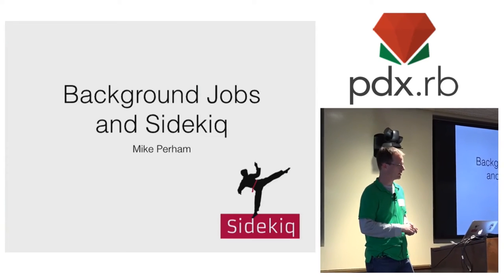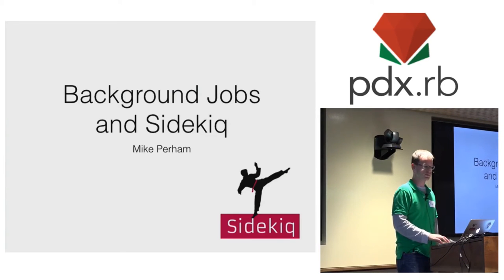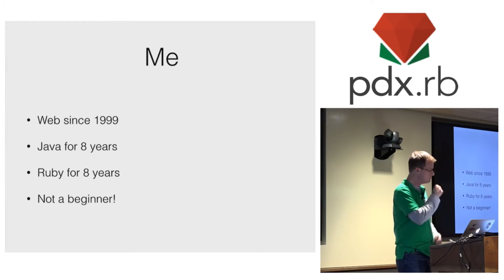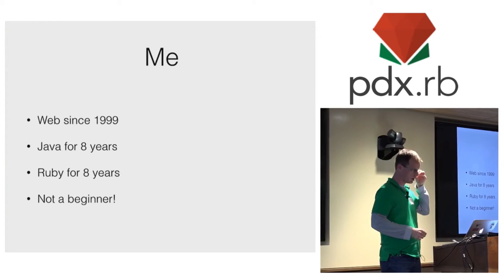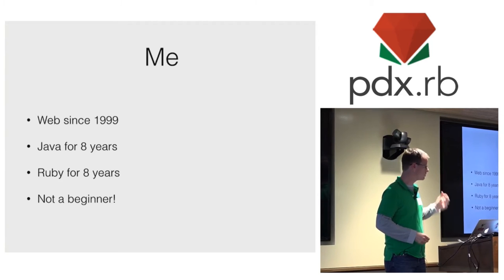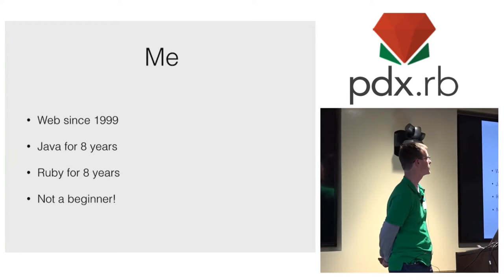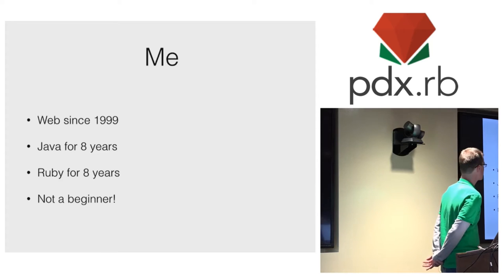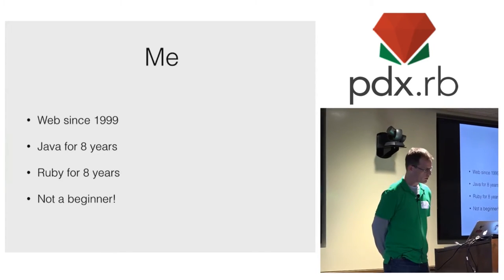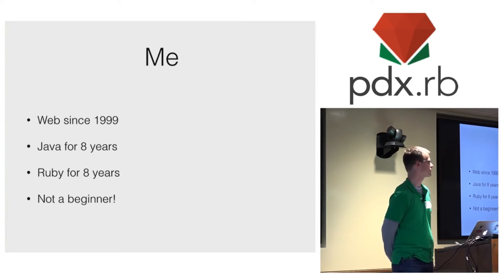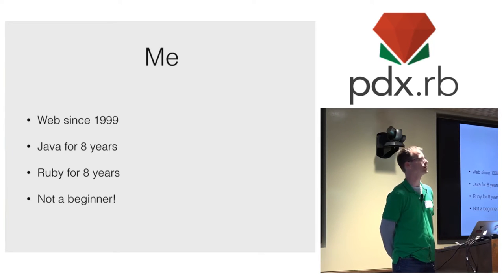My name's Mike, and I write Sidekick, which is an open source background job framework. About myself — I've been programming for the web for 15 plus years. For the first half I did Java, and that was a lot of fun, as you might imagine. But for the last eight years I've been doing Ruby, and increasingly more open source, increasingly just enjoying Ruby and Rails — and I love it, and I had no plans to stop anytime soon.